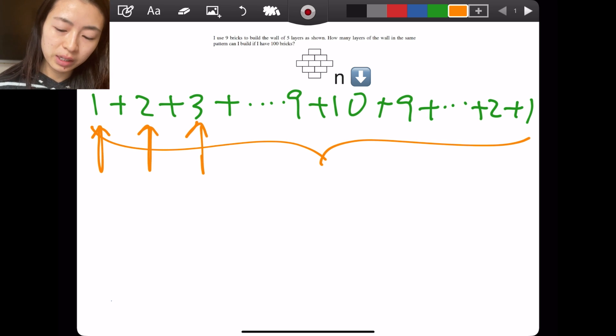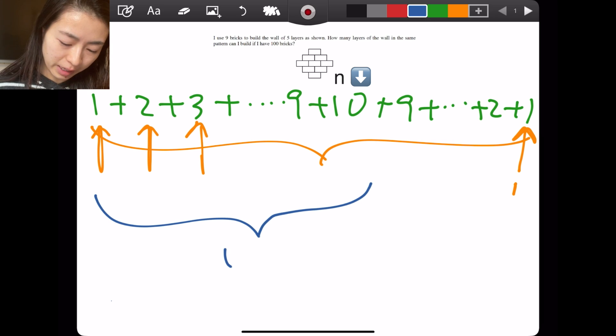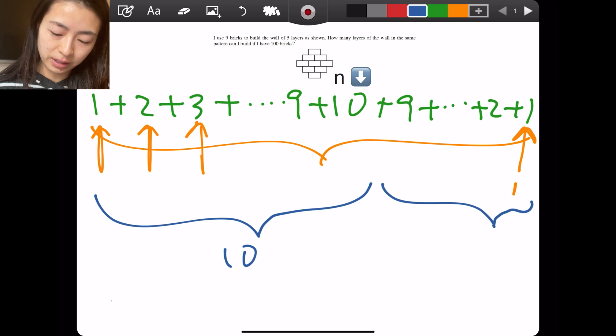How many numbers are here without having to write it all out? Well, we have 10 numbers at the start, and then we just count all the way down from nine to one. So that's nine numbers here, which means we have 10 + 9 = 19 layers, and that is our answer.